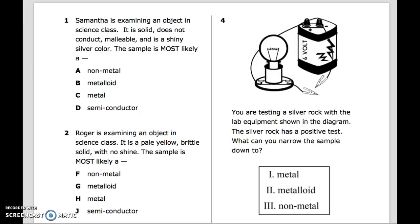Question 2: Roger is examining an object in science class. It is a pale yellow, brittle solid, with no shine. The sample is most likely: F. Nonmetal, G. Metalloid, H. Metal, J. Semiconductor.